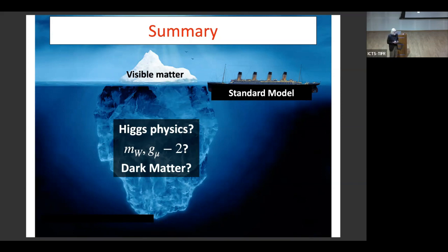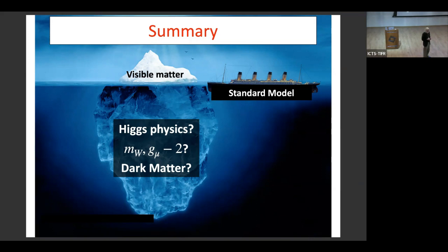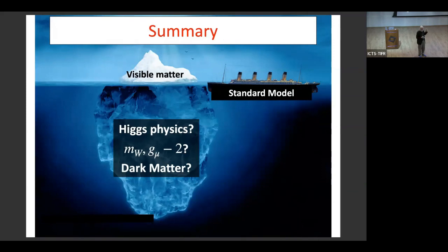Comment: Similar things happened at the Tevatron — they produced many Higgs bosons but could never see them. It's possible supersymmetric particles are produced but we're not able to see them yet. Response: I personally don't believe there's any evidence in current collider data for supersymmetry. But there is at least one region of parameter space where supersymmetry could exist and be within reach of the LHC — a compressed stop spectrum accessible to the LHC. There are certainly unexplored lampposts at the LHC, but I don't want everybody to focus only on supersymmetry.